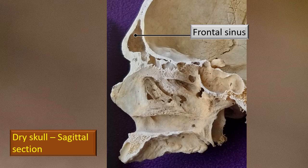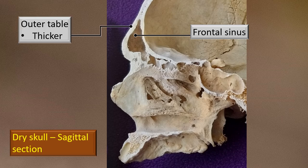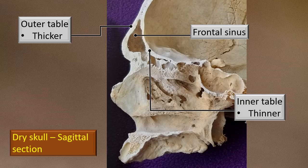Here is a dry skull in sagittal section for better orientation. You can see the frontal sinus clearly. The outer table, which forms the anterior wall of the sinus, is thicker. The inner table, forming the posterior wall, is relatively thinner. Both walls are reasonably substantial, but the anterior wall is thicker than the posterior wall.